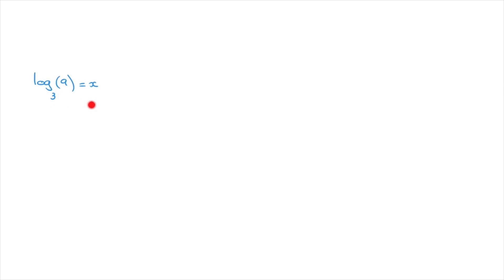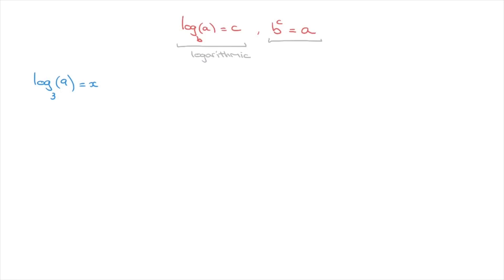Now, this equation is a logarithmic equation, and the method we learn here involves rewriting this equation as an exponential equation. To do that, we're going to need this well-known result: if log base b of some number a equals to c, then b raised to the power of c will equal to a. When we write log base b of a equals to c, that's the logarithmic form, and when we write b to the power of c equals to a, that's the exponential form. Both of these equations are completely equivalent.